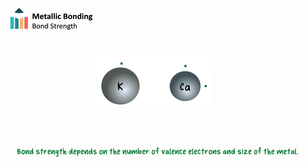The strength of the metallic bond affects each of these properties. Strength will specifically depend on the number of valence electrons, the size of the metallic cation, and how closely the cations can pack within a lattice structure.